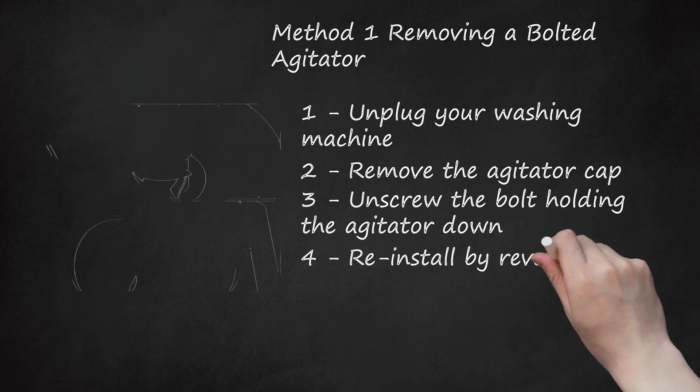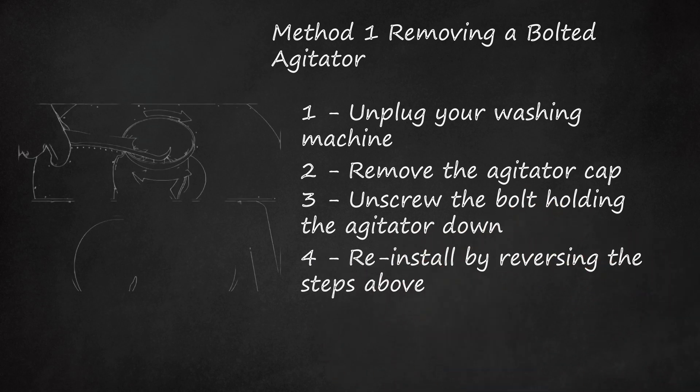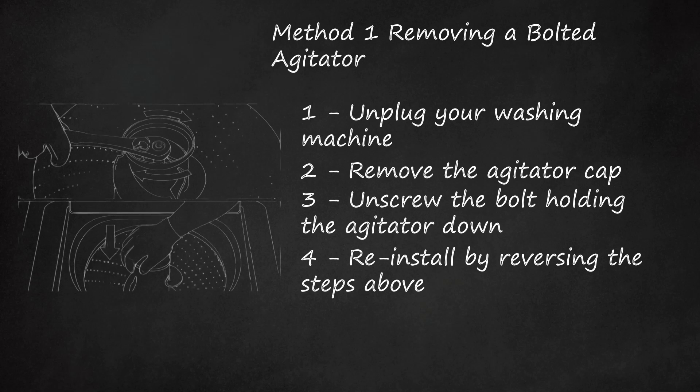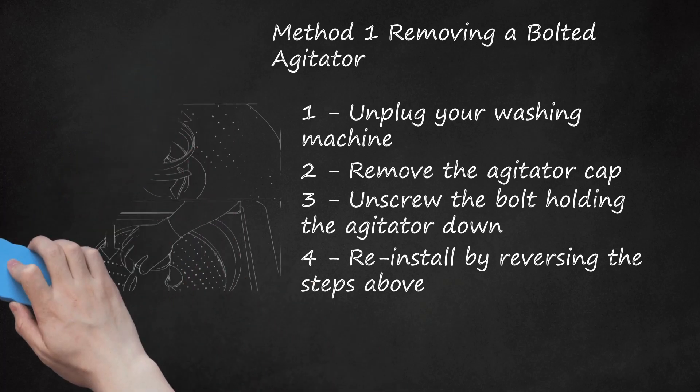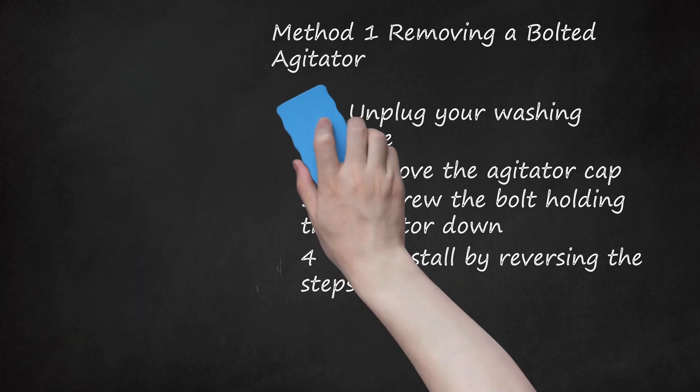Step 4: Re-install by reversing the steps above. For bolted agitators, re-installation is usually quite simple. Place the agitator back in the wash compartment, replace the bolt or screw, re-tighten it, and replace the agitator cap. At this point, your maintenance is complete. Plug your washing machine back in and test the function of your agitator to ensure it's working properly.